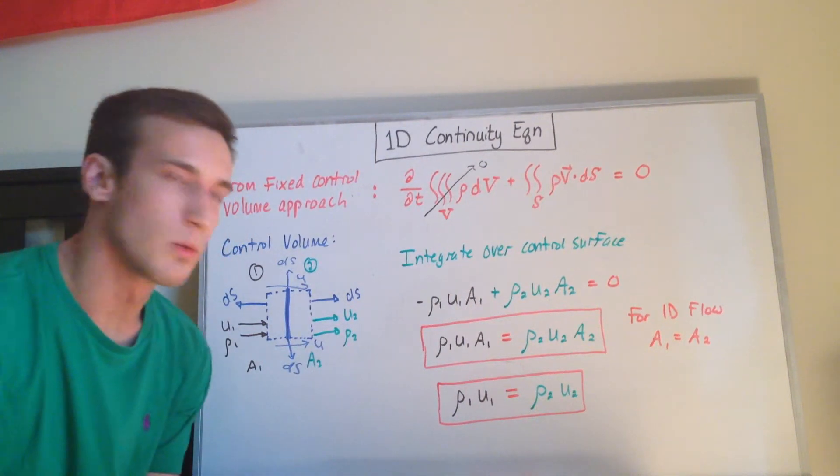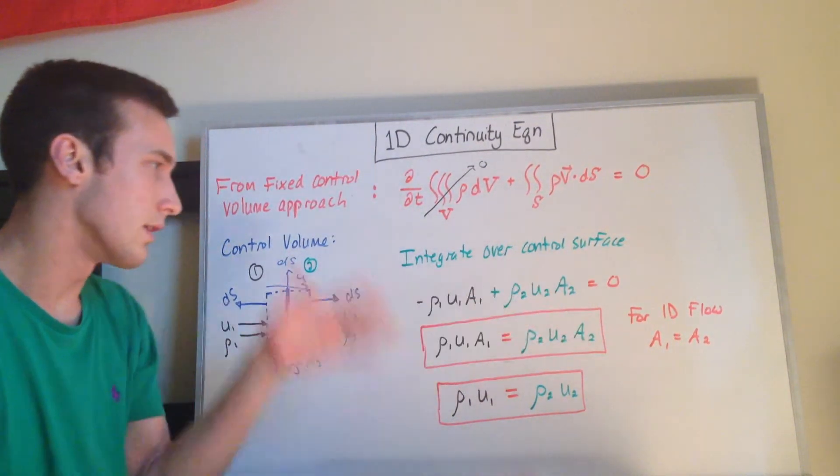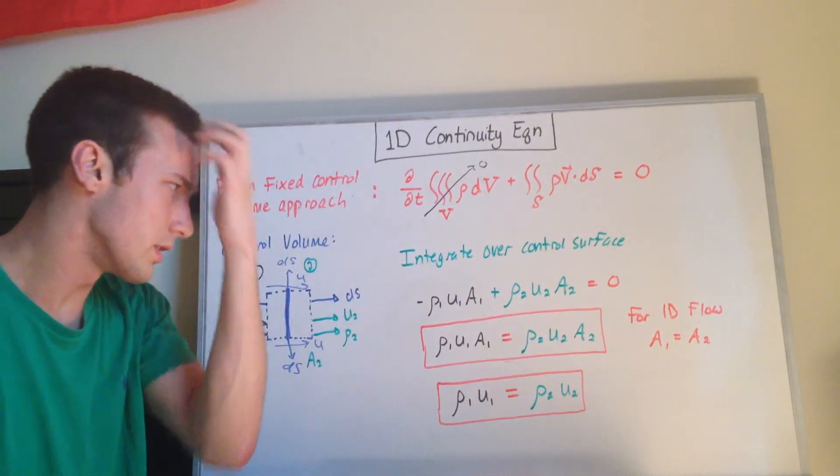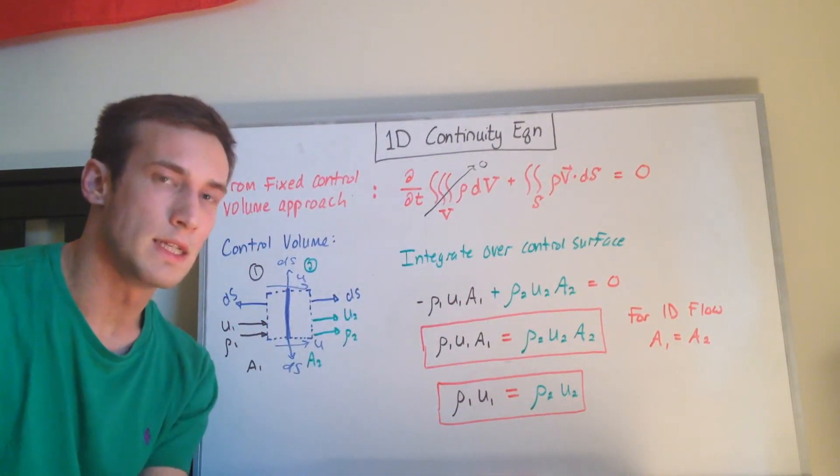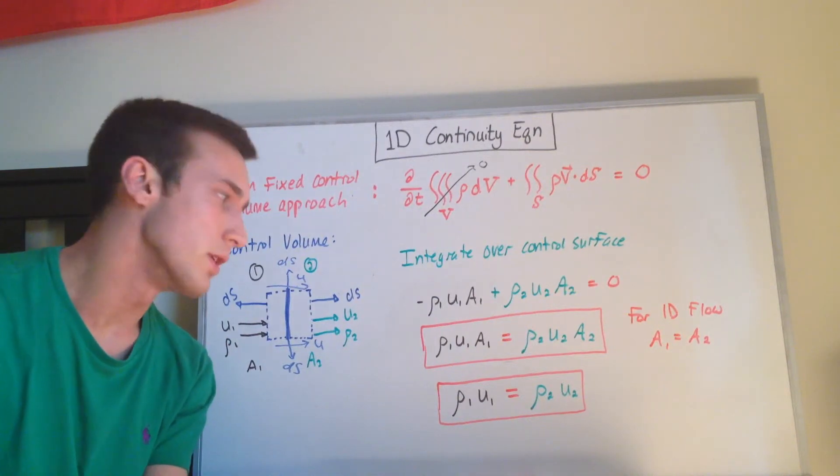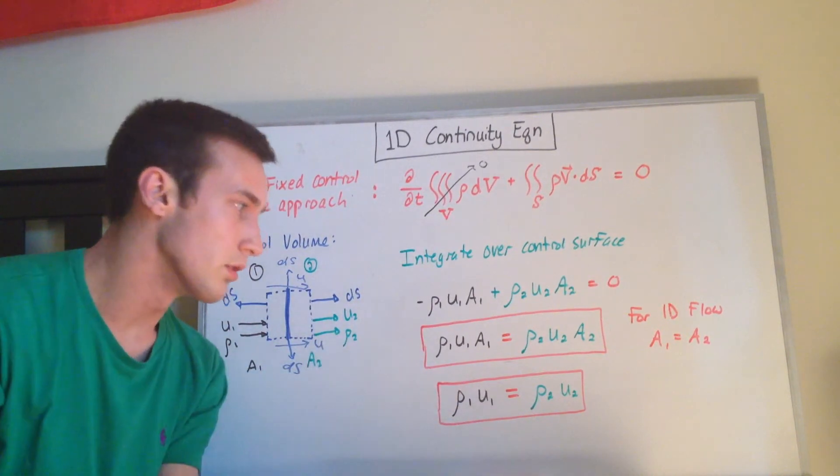And for 1D flow that we're looking at, the area on the left side is equal to the area on the right side, so a1 is equal to a2, so those cancel out. And the final form that you get for the 1D steady flow continuity equation is rho1u1 is equal to rho2u2.